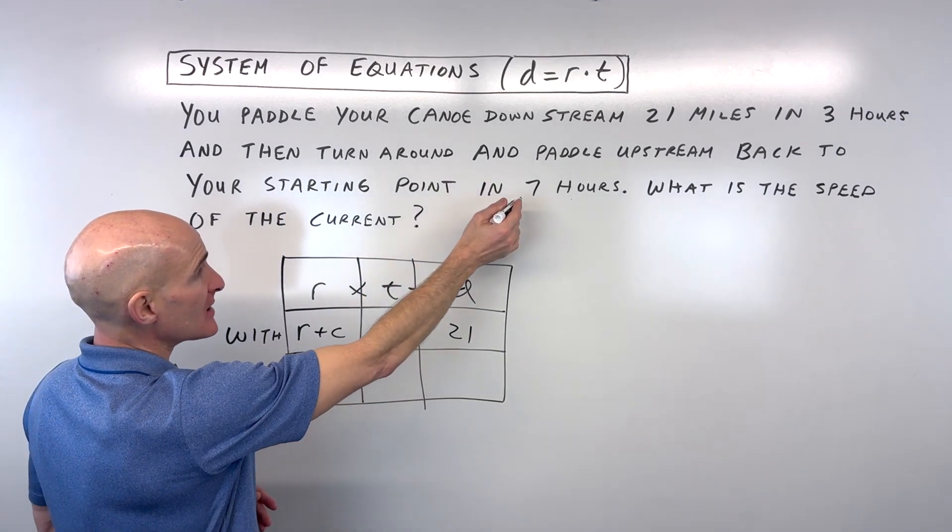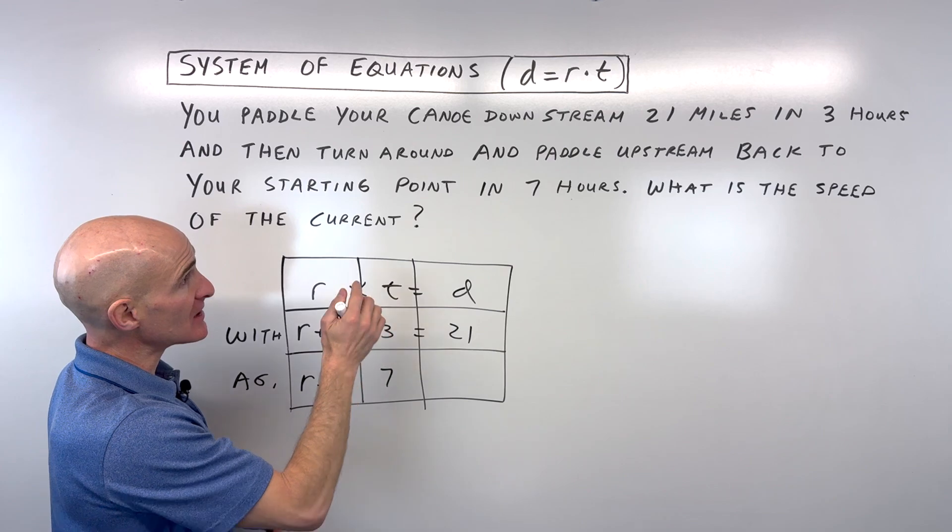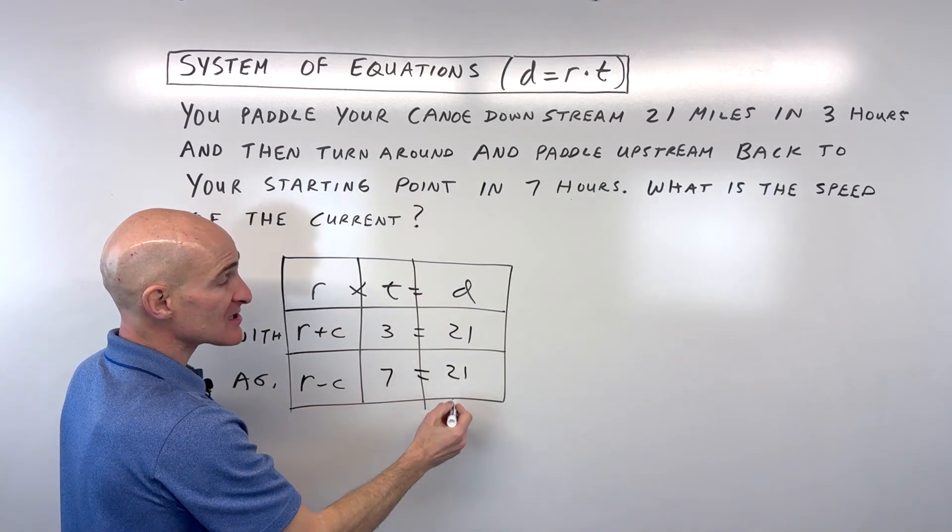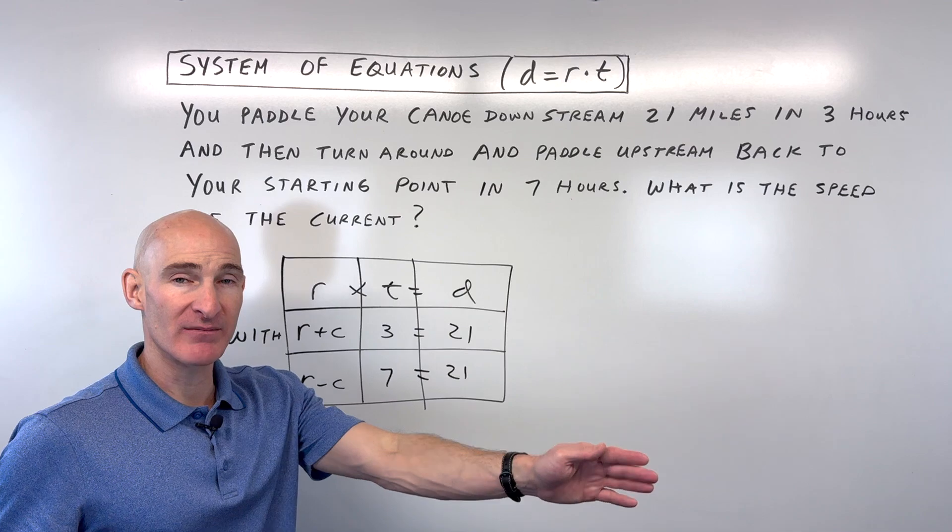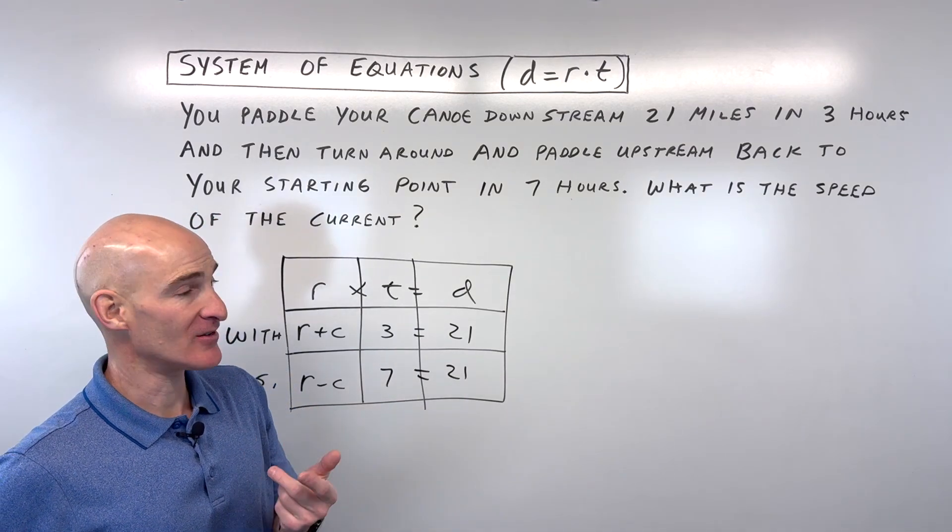And that's why it takes you longer. It takes you seven hours to get back to your starting point. But notice the distance is still the same 21 miles because you're going back, down and back, same distance.